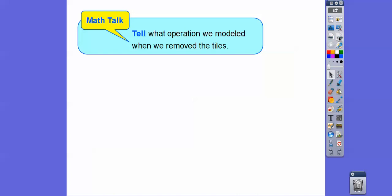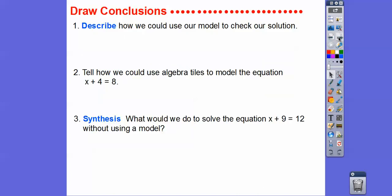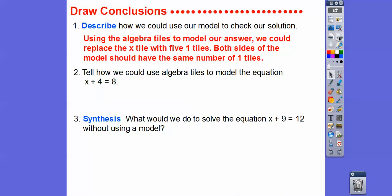The operation we used when we removed those tiles was subtraction. To check our solution, we can use algebra tiles to model our answer: replace the x tile with five one tiles. Since we already had the two on there, both sides of the model now have the same number of one tiles — they both have seven tiles. That's how we verify the solution.